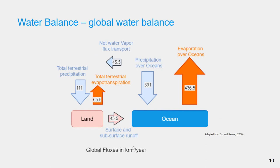Oki and Kane estimated the global water balance in their paper titled Global Hydrological Cycles in World Water Resources in 2006.